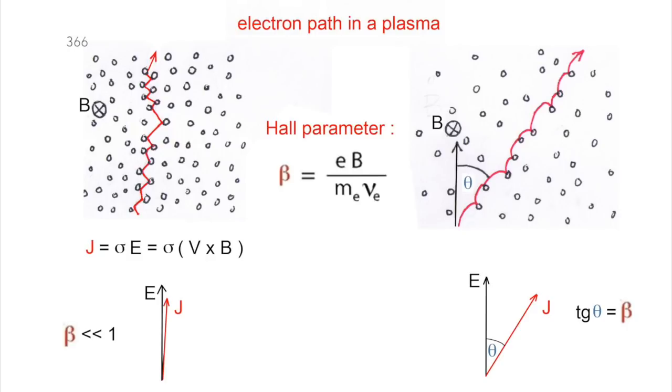As a result, the current density vector J differs significantly from the electric field direction. Theta is called the Hall angle.